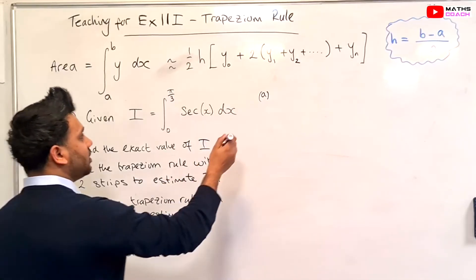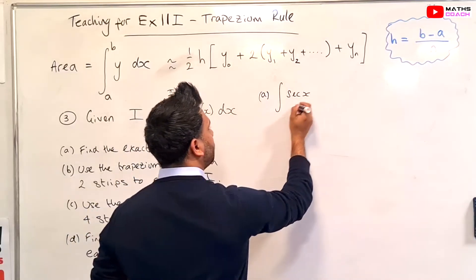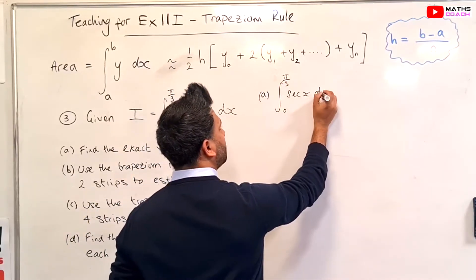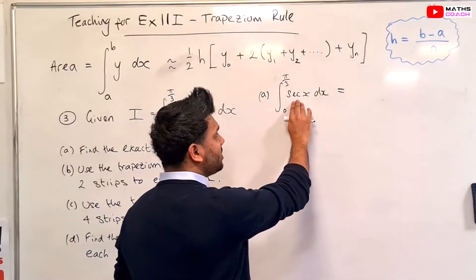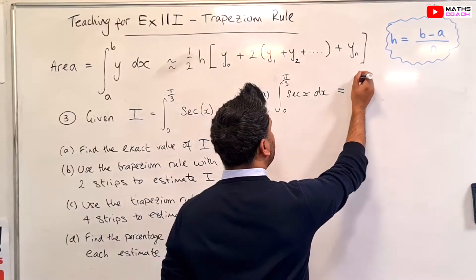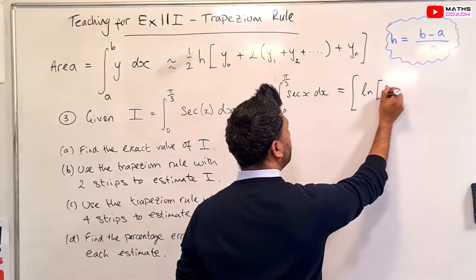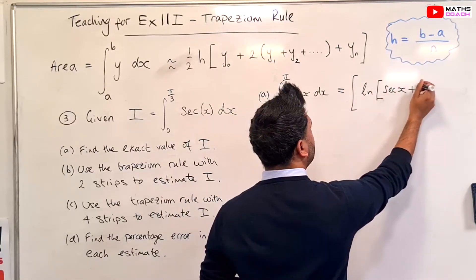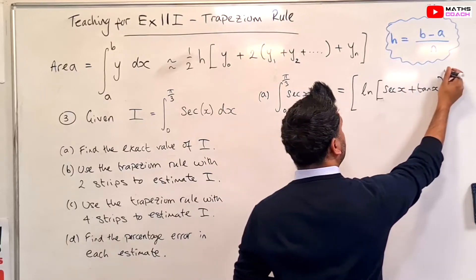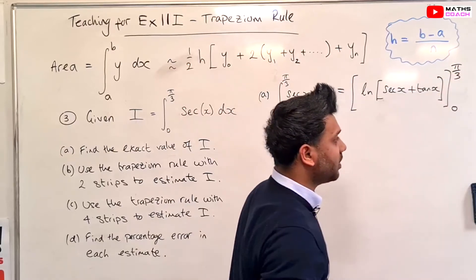Okay, let's do part a. So the integration of sec x from 0 to pi by 3 dx. To integrate sec x you can look this up from the formula booklet. So sec integrates into ln of sec x plus tan x, and we're going from 0 to pi by 3.